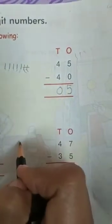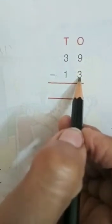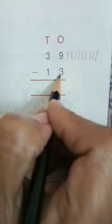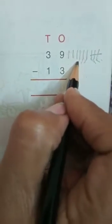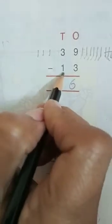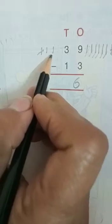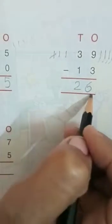Now next: 39 minus 13. We have nine ones, and you have to take away three ones — one, two, three. How many ones are left? One, two, three, four, five, six. Now there are three tens — one, two, three — and you have to take away one ten. How many tens are left? One, two. The answer is twenty-six.